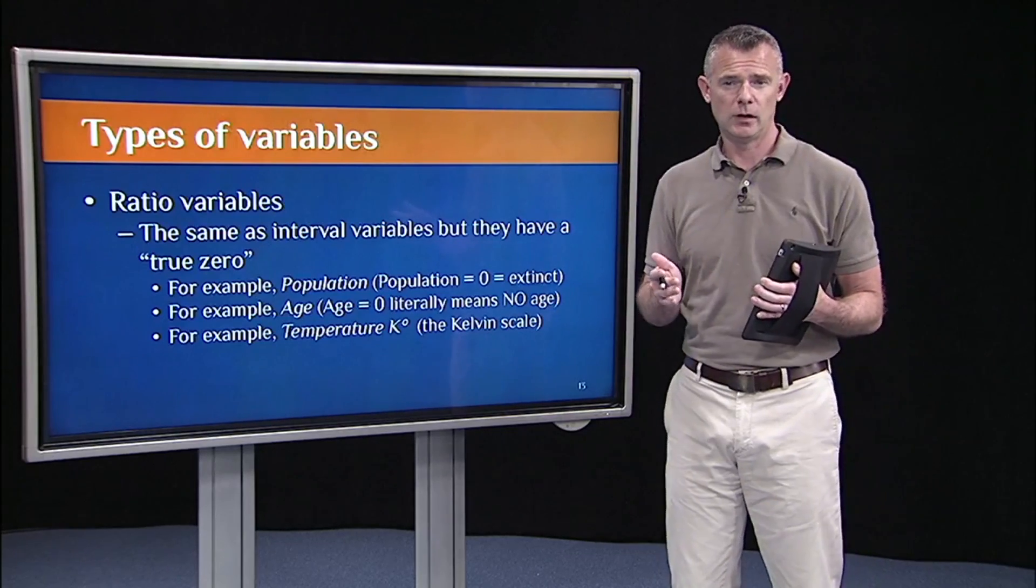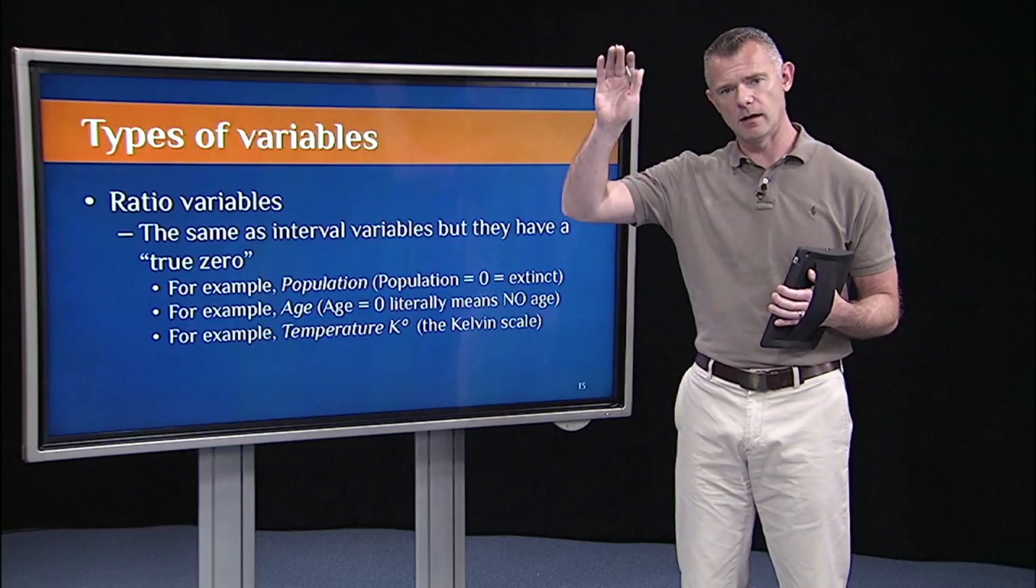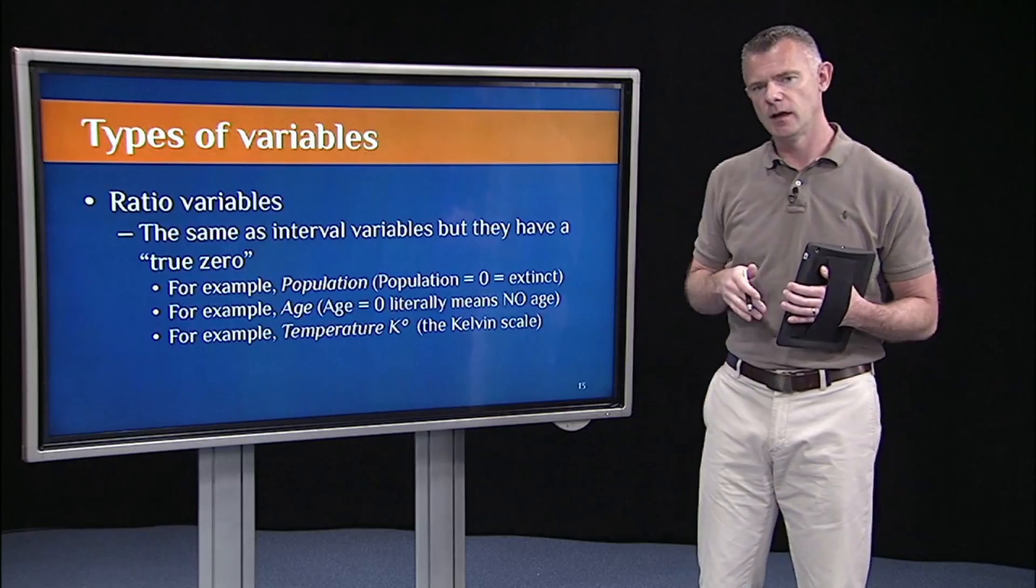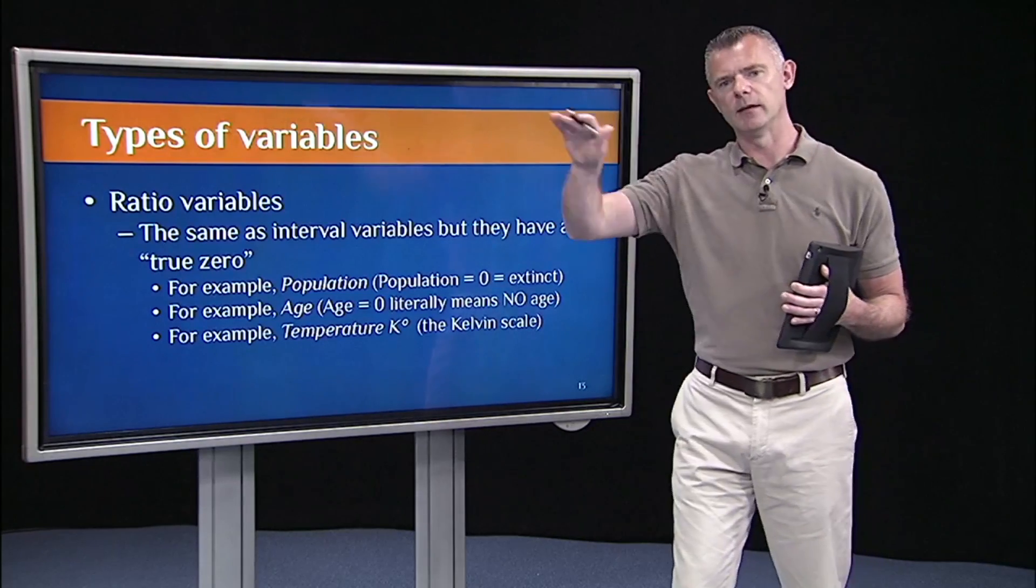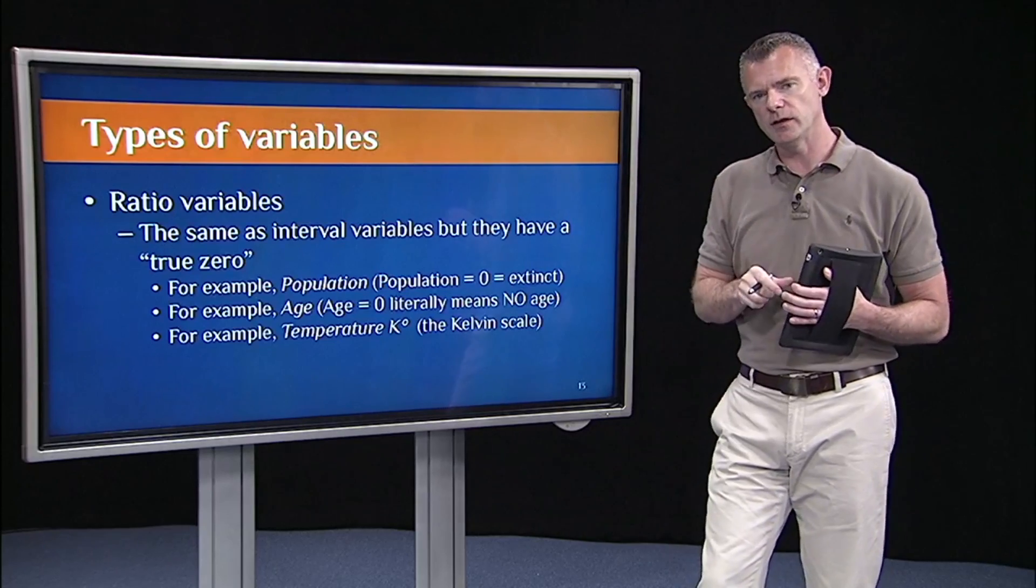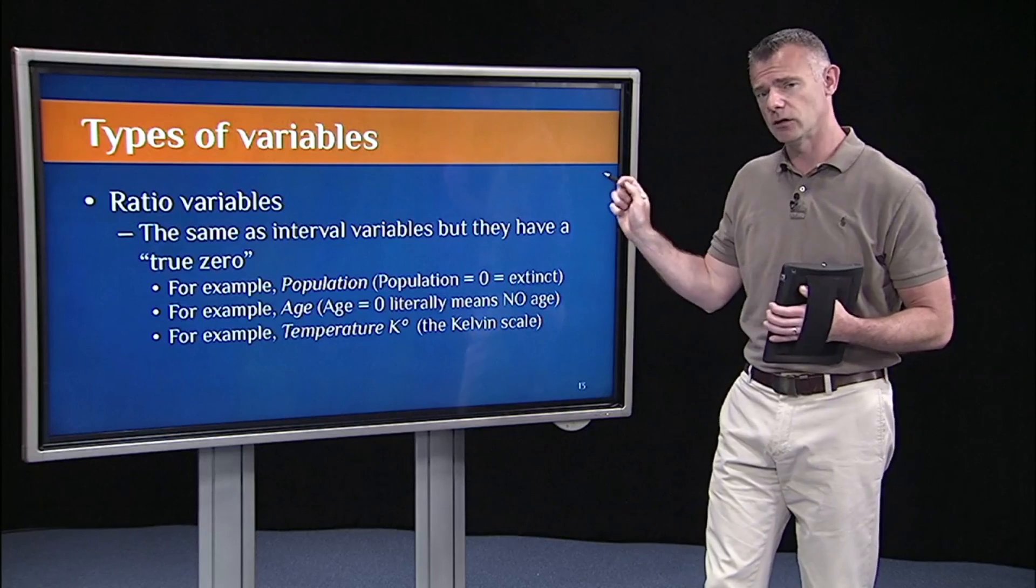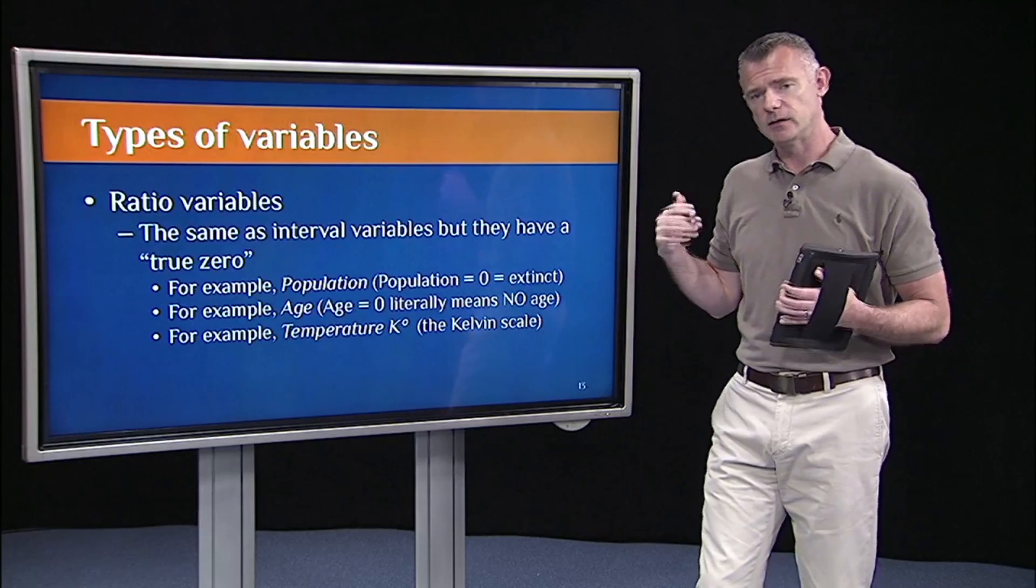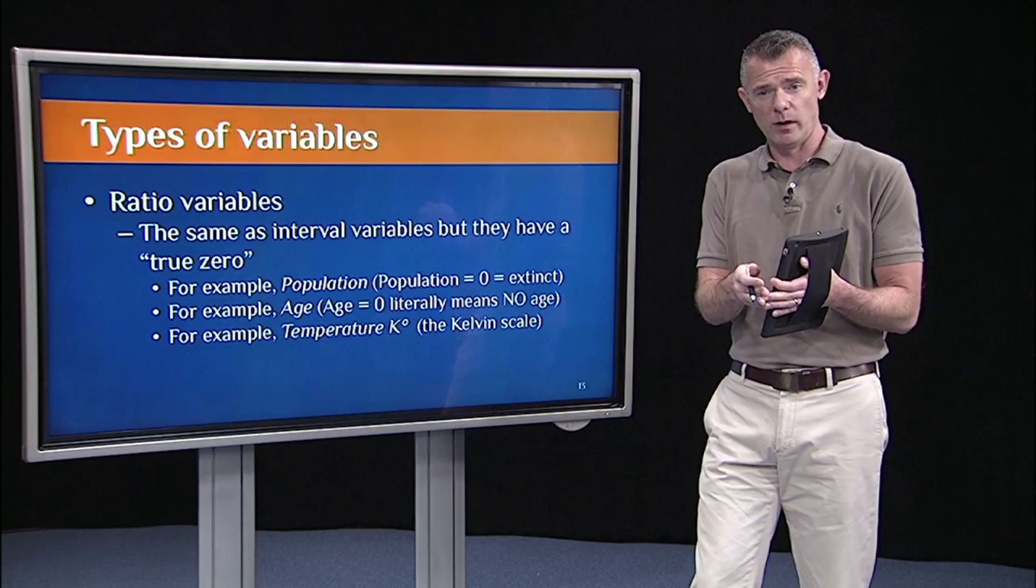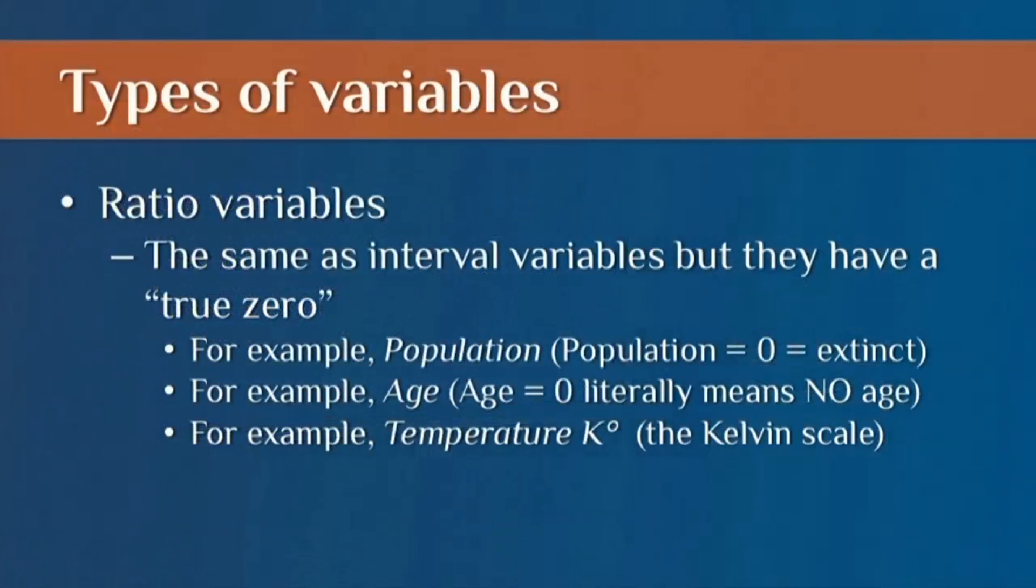let's take population. When I talked about ranking the different countries, all I was doing is ranking them. I wasn't talking about the actual populations. If I wanted to look at the actual population, population is a ratio variable. It's a ratio variable because it has a zero point. If the population of a country is zero, that's meaningful. That means that humans are extinct in that country. So it's a true, what we call a true zero.